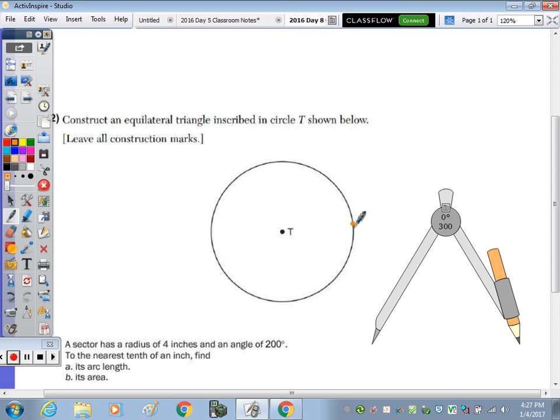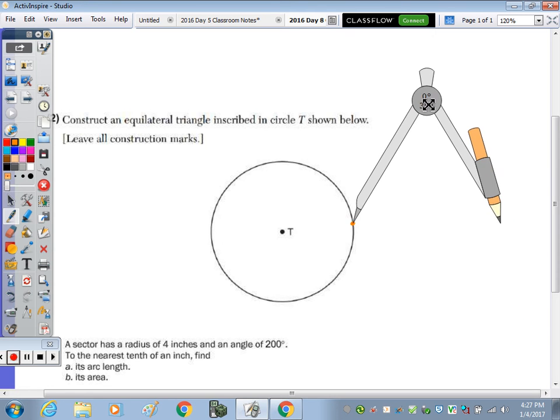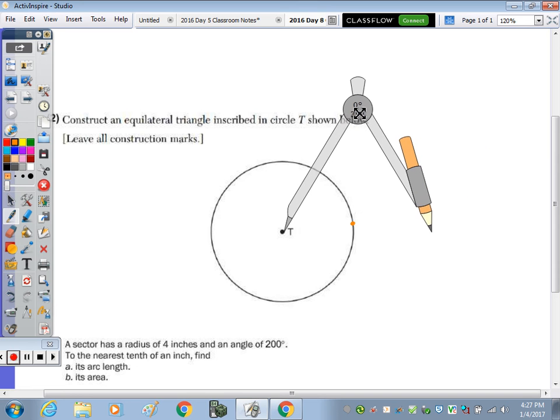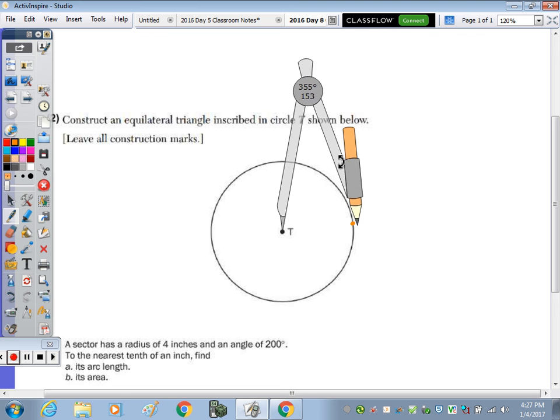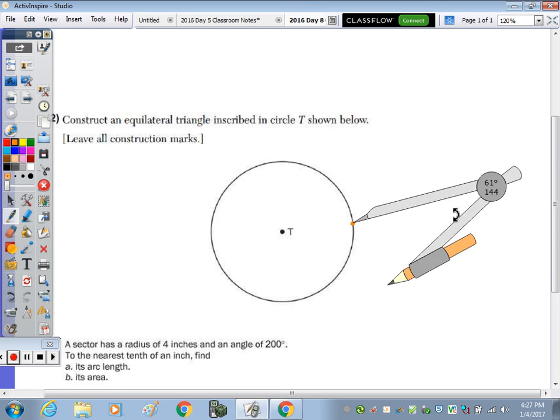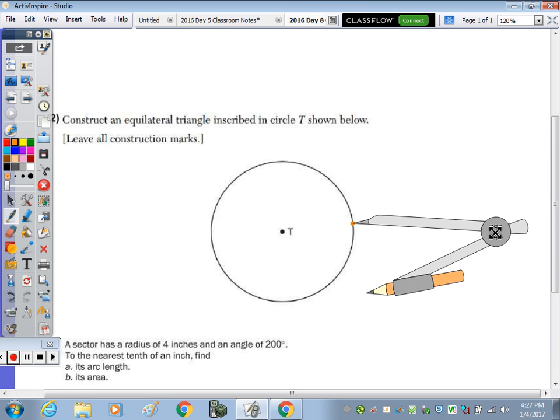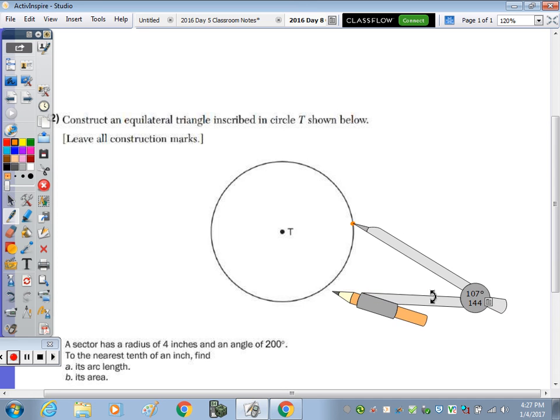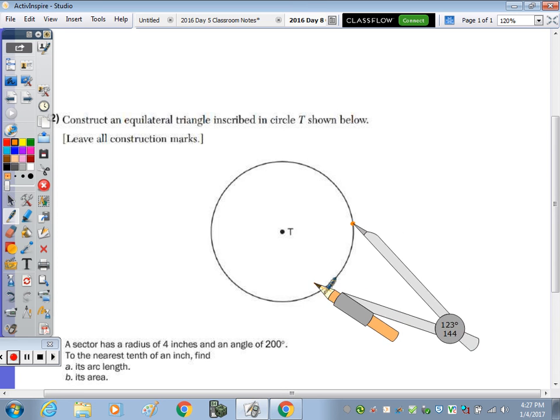So we put a point on the circle and measure the distance from the center to that point on the circle, which is your radius. And from there, we're going to make five more arcs, which would give us six congruent arcs around the circle, and congruent arcs give us congruent chords.